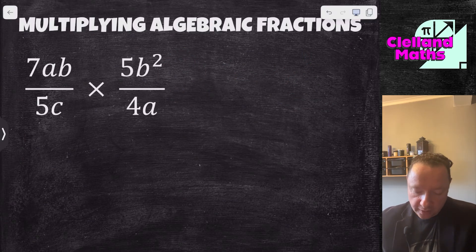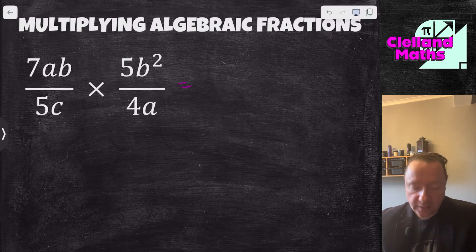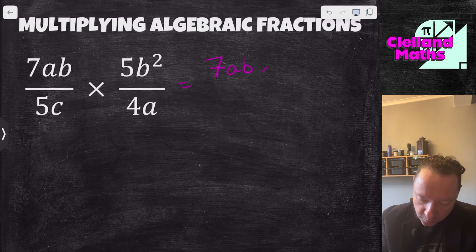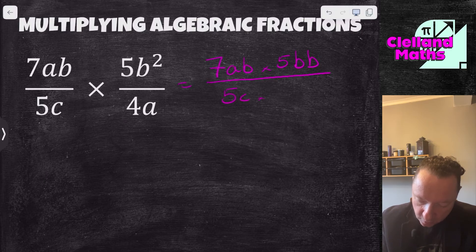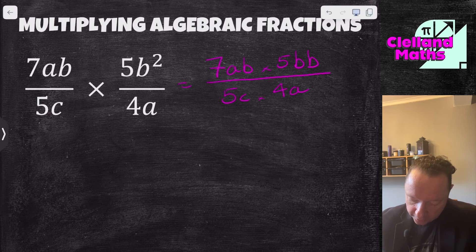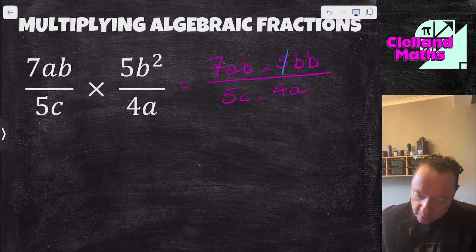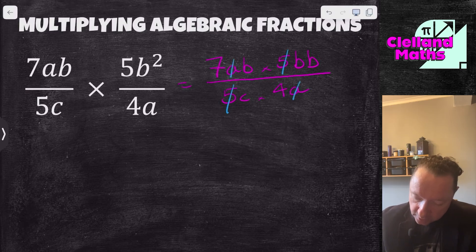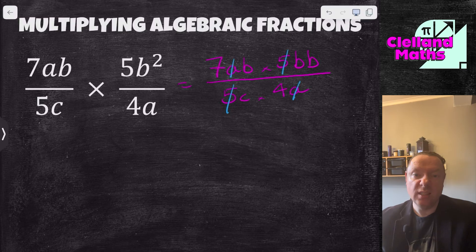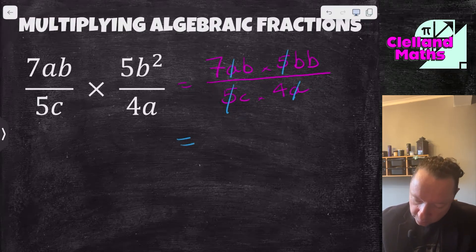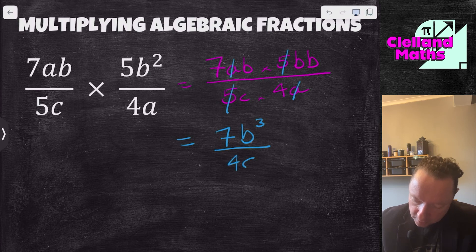Getting a little bit trickier. We've got 7ab times 5b squared over 5c times 4a. Writing that as one single fraction and expanding the b's: 7ab times 5bb over 5c times 4a. You can see straight away that a 5 on the top and a 5 on the bottom cancel, an a and an a cancel, and there are no b's or c's on the bottom left. 7 and 4 share no common factors, so the answer is 7b cubed over 4c.